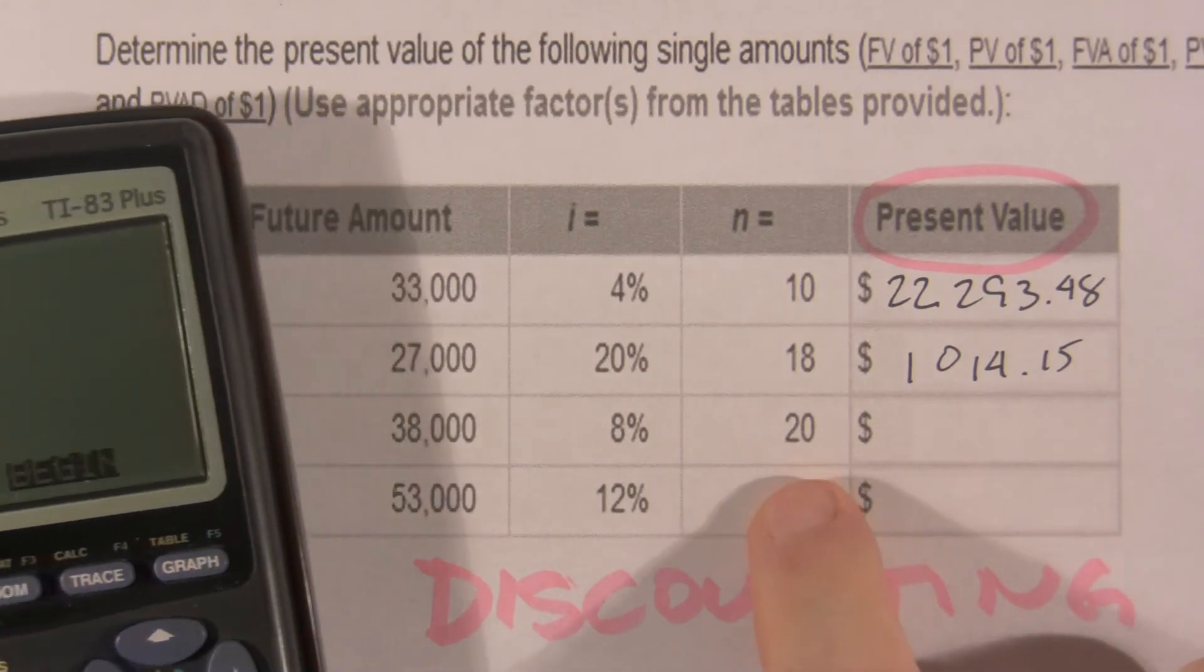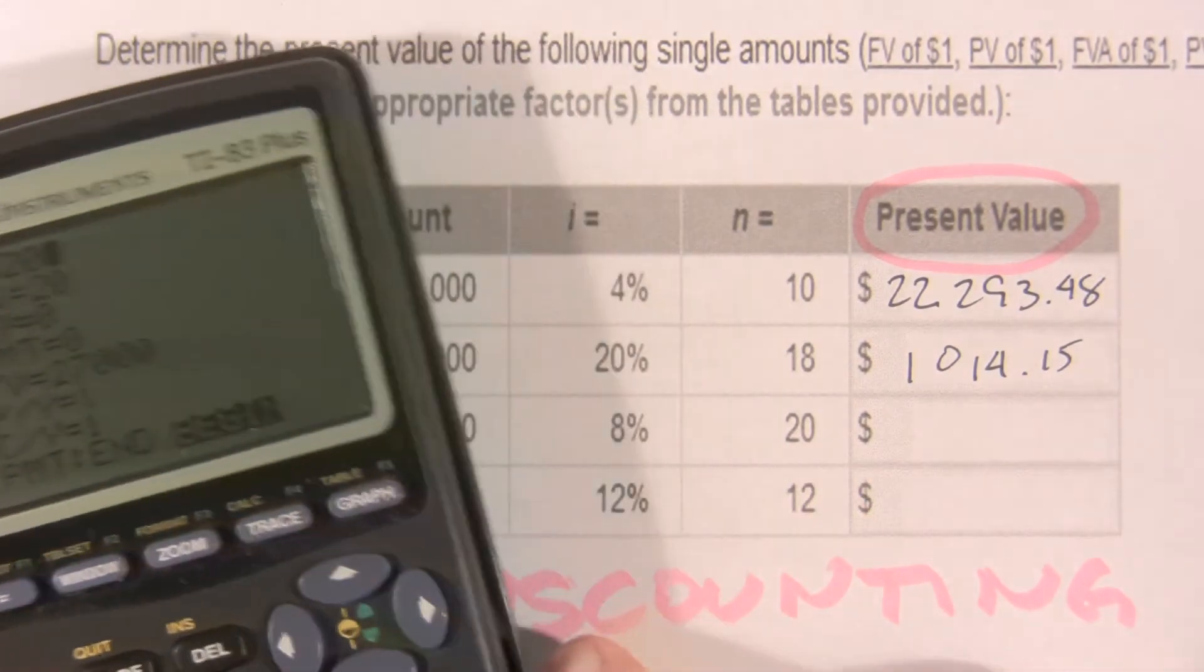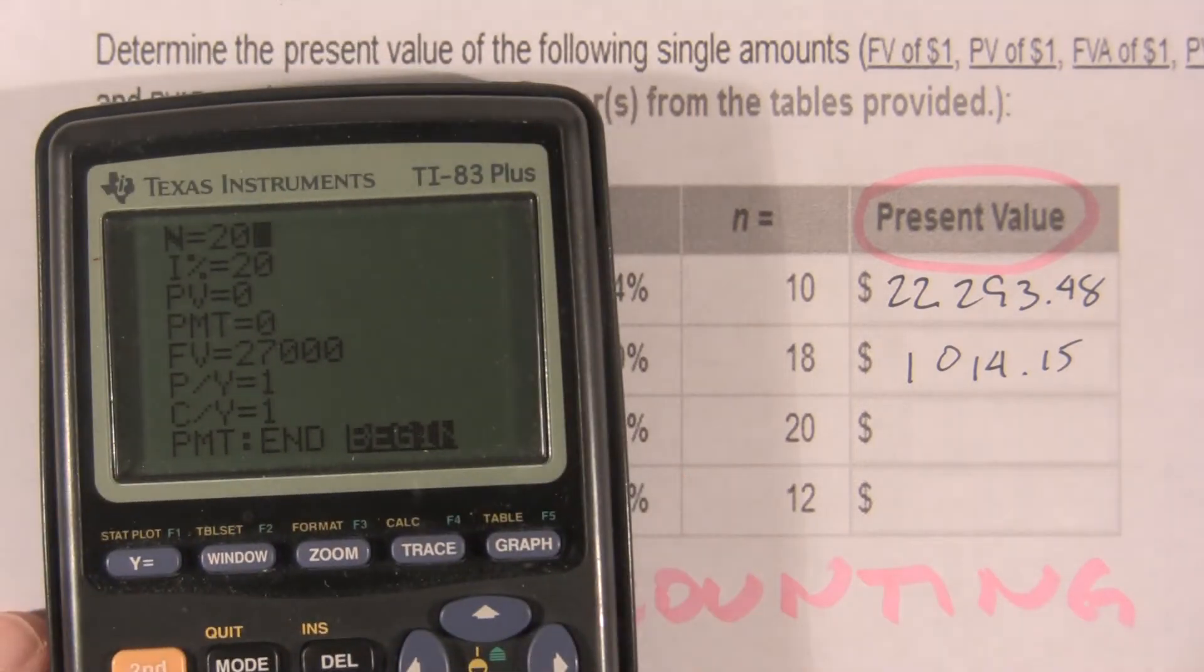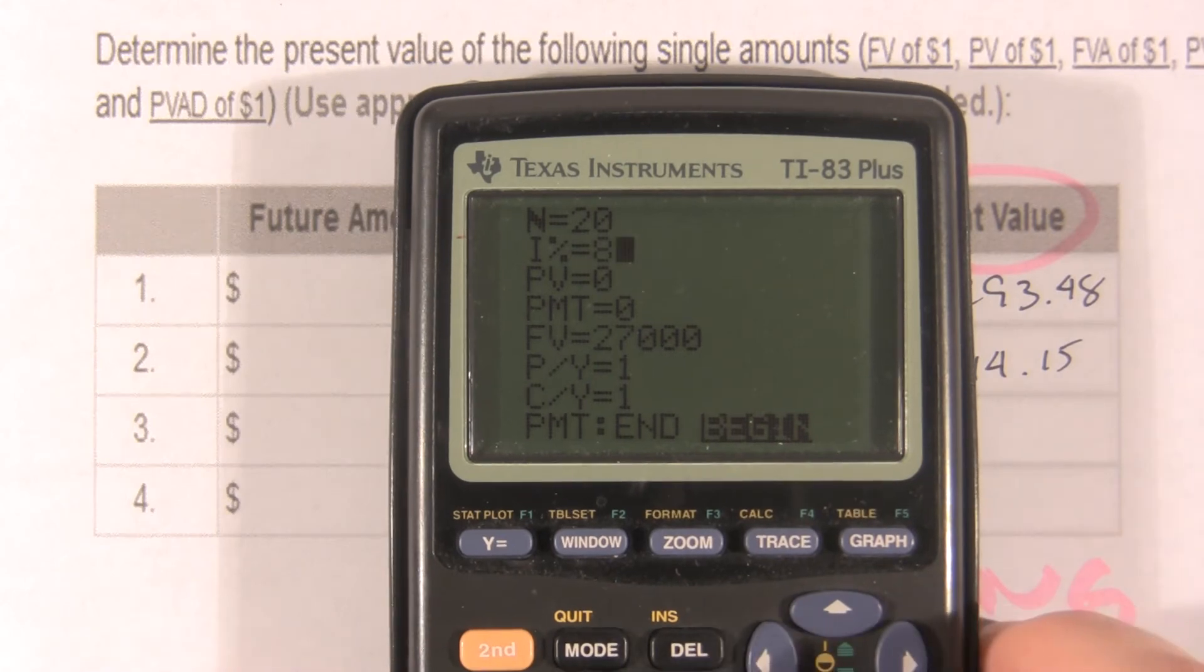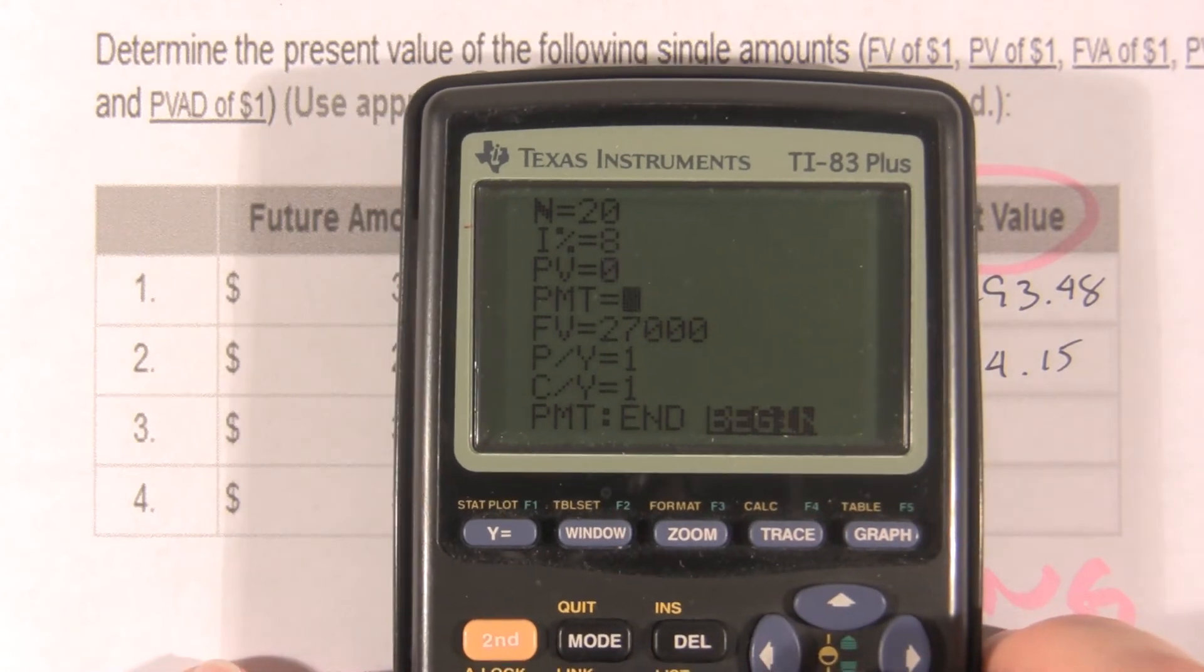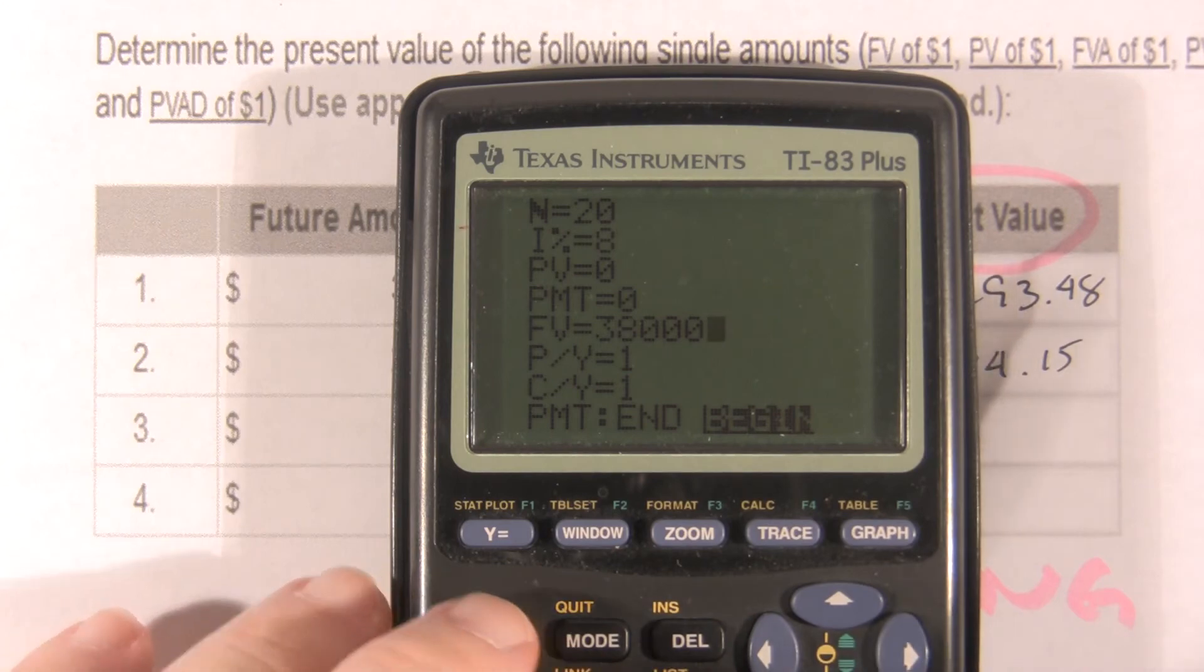Our N in this one is 20. Our interest rate in this one is 8. We're looking for the present value. We're not making any payments. We know at the end the future value will be $38,000.